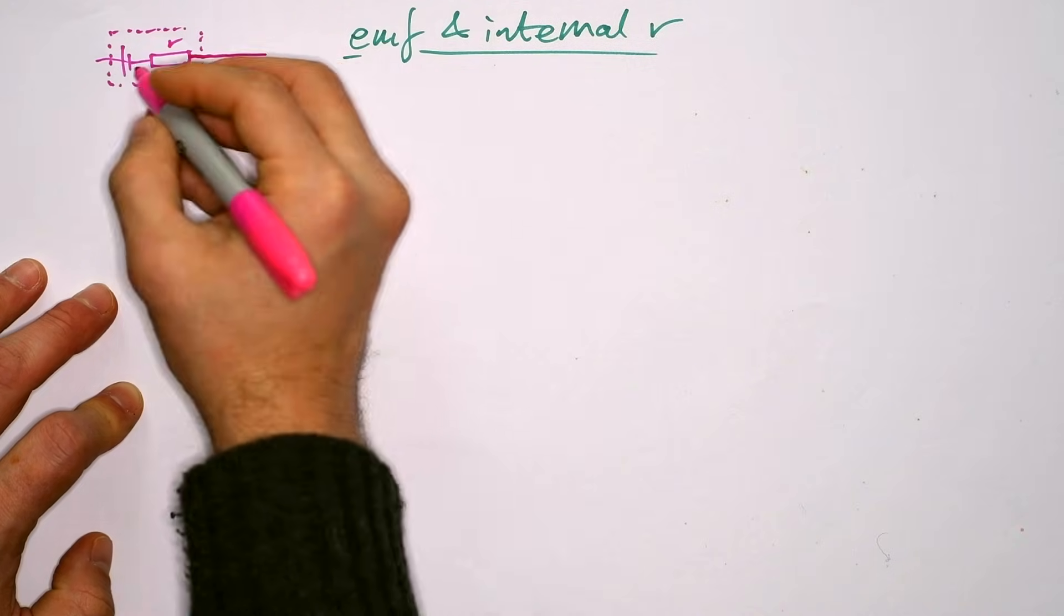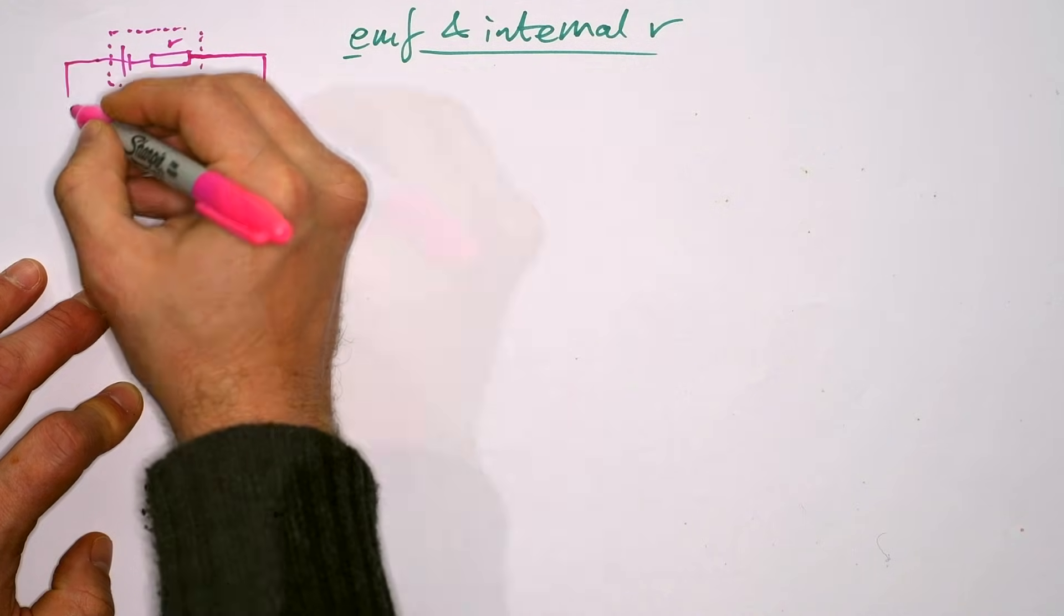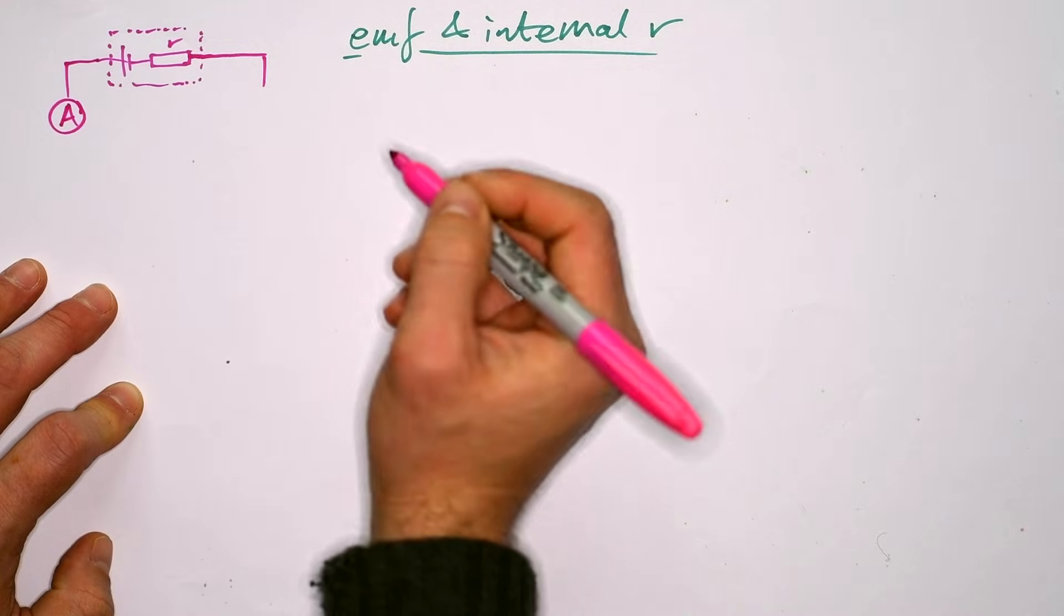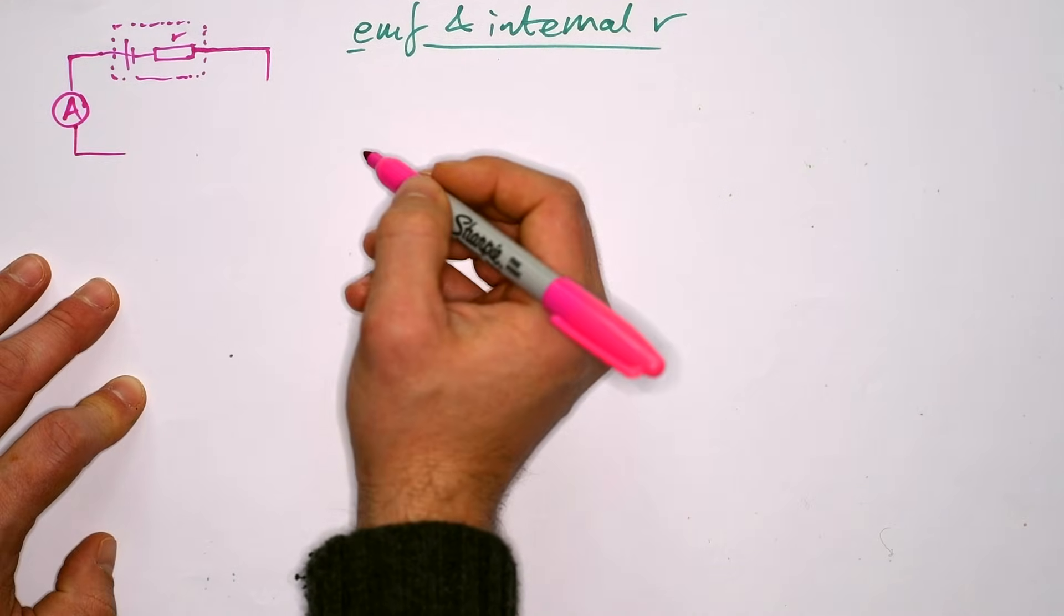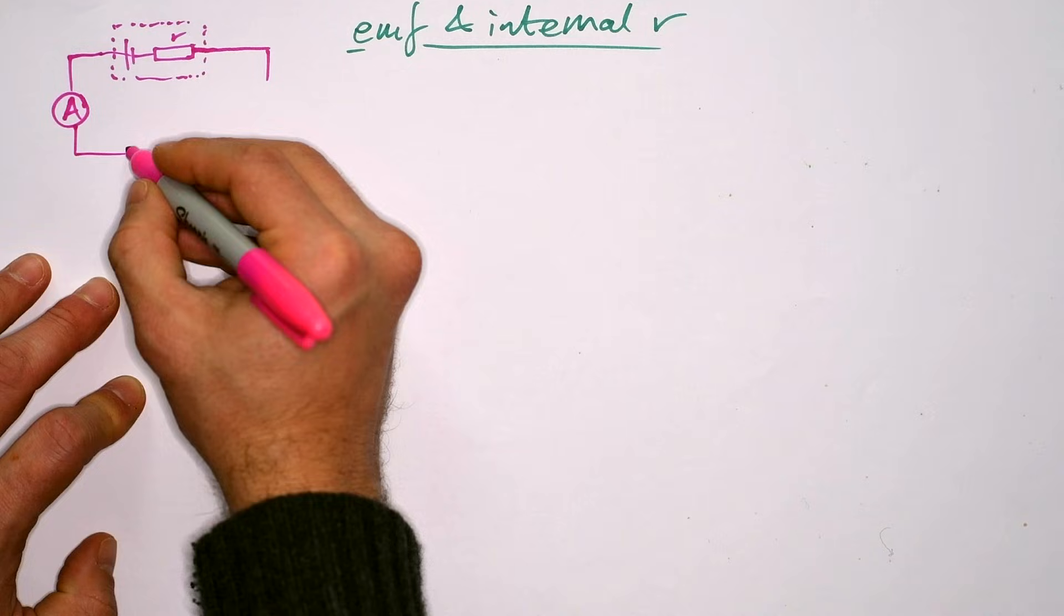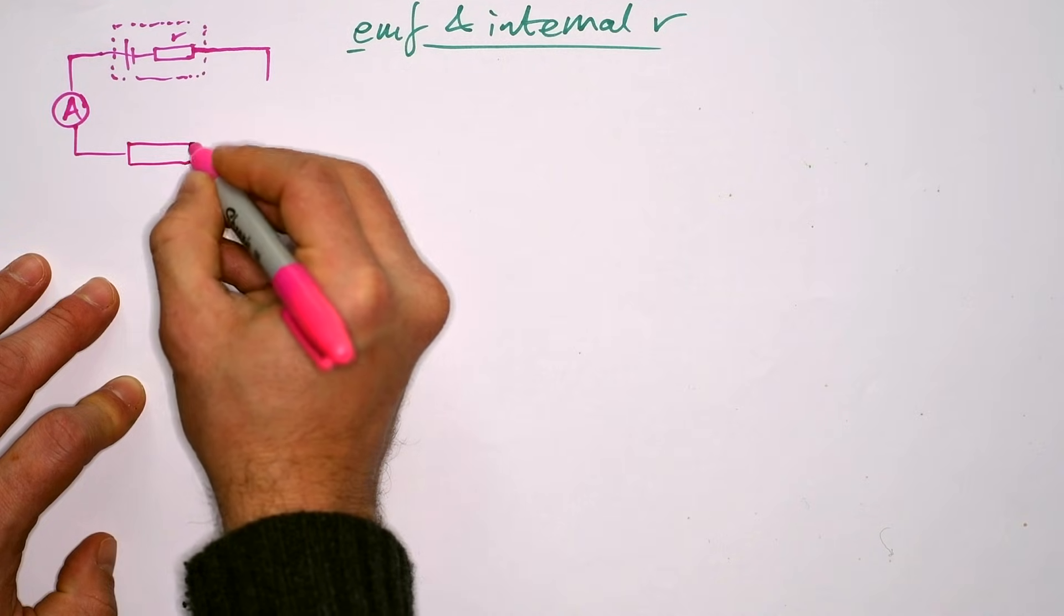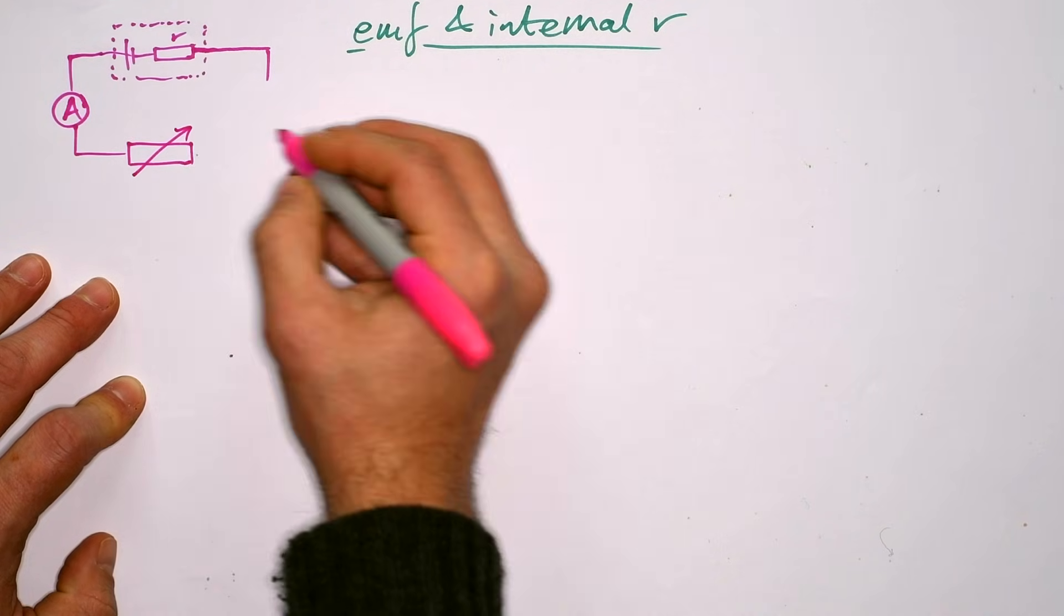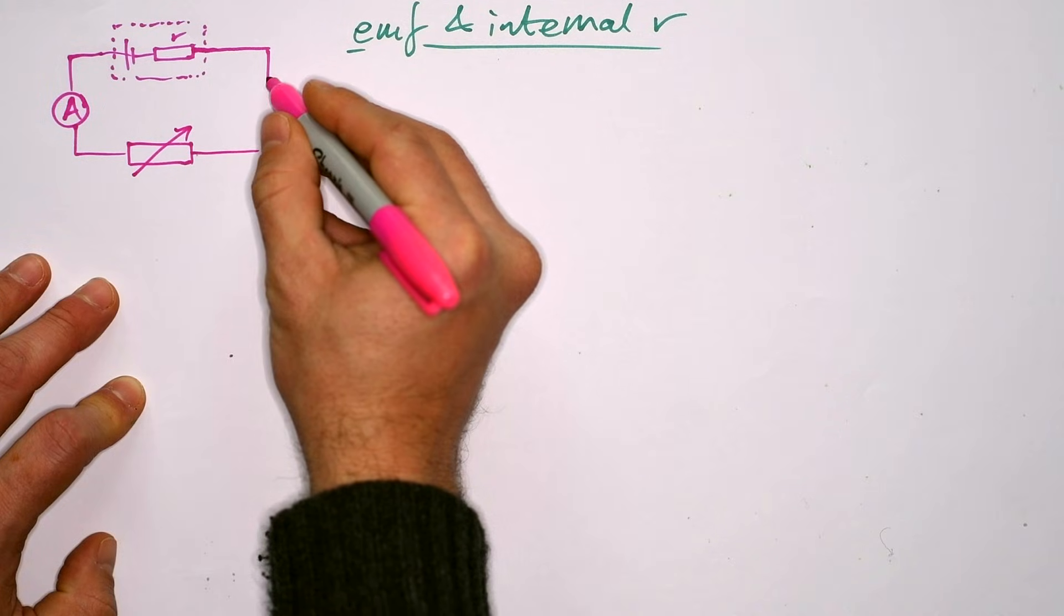Then what we need to do is to be able to measure current flowing through the battery, obviously just using an ammeter, and we need to be able to change the current. So we need a load resistance as well, and we need to be able to change that, so that's going to be a variable resistor.